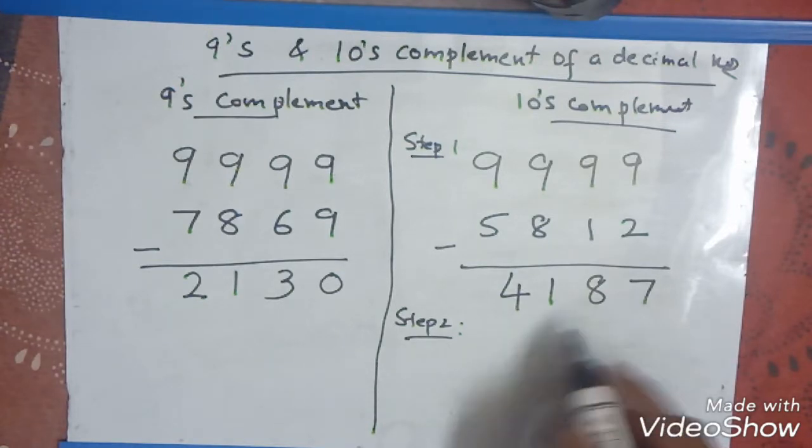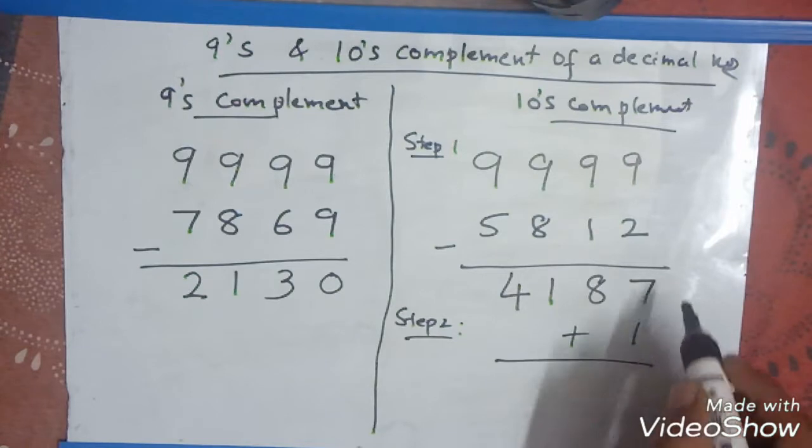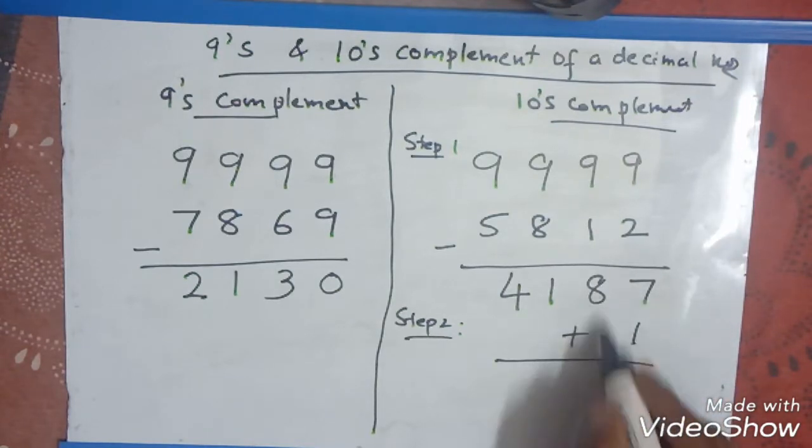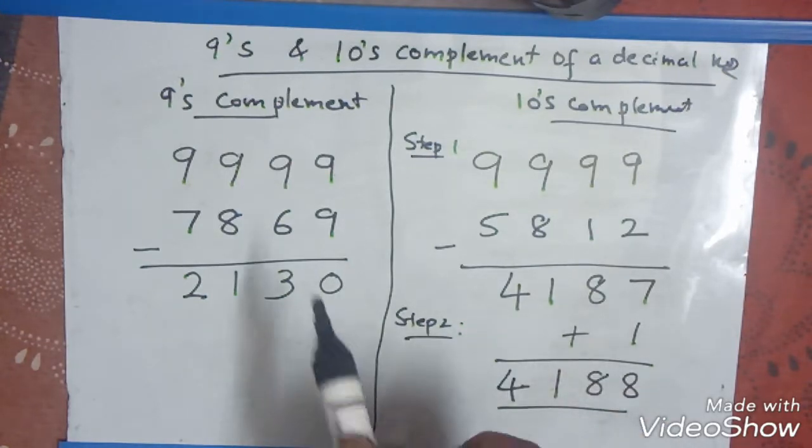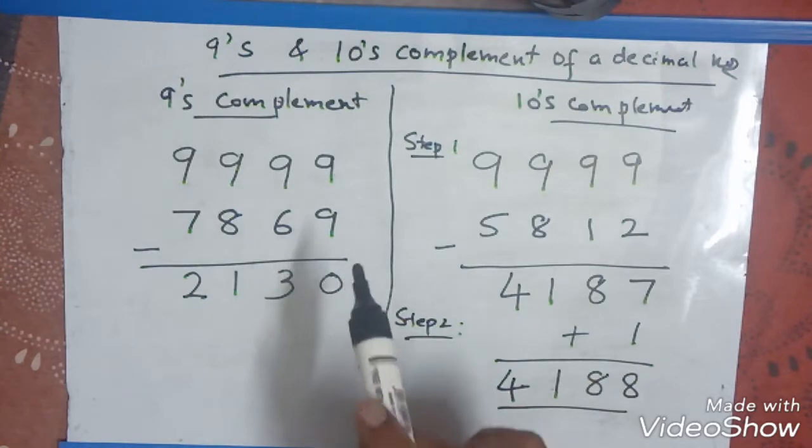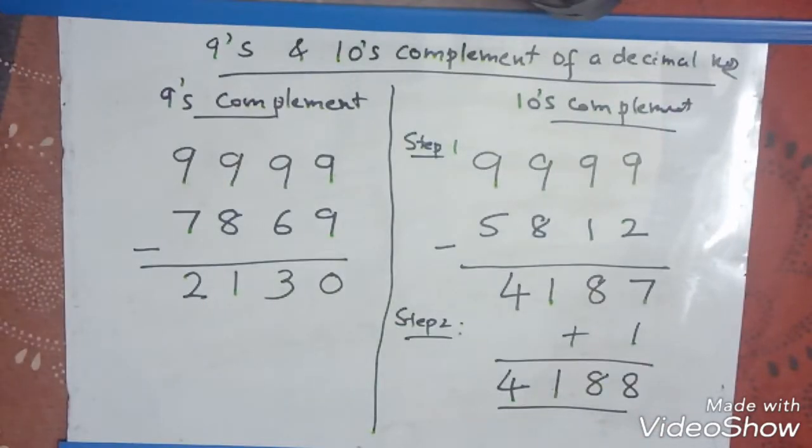Then in step 2 you need to add 1 to the 9th complement. So this is the 9th complement: 4187. 7 plus 1 is 8, and this is 8 as it is, this is 1 and this is 4, giving us 4188. So this is what the problem is about: 9th and 10th complement of a decimal number.